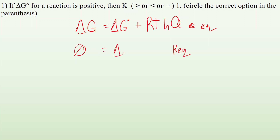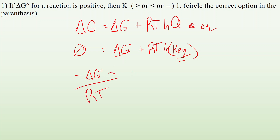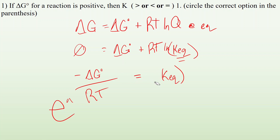Our equation becomes: zero equals delta G0 plus RT times the natural log of KEQ. Rearranging — subtract delta G0 from both sides, divide by RT — we get the natural log of KEQ. To get rid of the natural log, raise both sides as a power of E (Euler's number), and we end up with KEQ equals E to the negative delta G0 over RT. If delta G0 is positive, the exponent is negative, which means KEQ is going to be less than one.